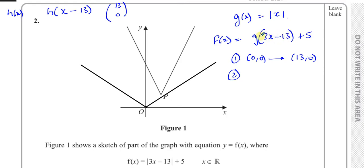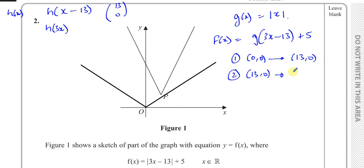The second transformation, still inside the function, is 3 times x. So h of 3x represents a horizontal stretch of factor one third — the reciprocal — because it's inside the function. So when it's 3 times x, the stretch factor is not 3, it's one third. We take the x coordinates and divide them by 3. So after the first part we were at 13, 0. Now that 13 gets divided by 3, giving us 13 over 3, 0. Then finally the plus 5 outside represents a vertical translation of 5 units upward, so the y coordinates increase by 5. Therefore point P ends up at 13 over 3 and 5.